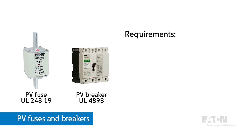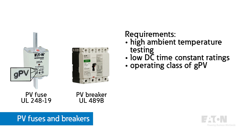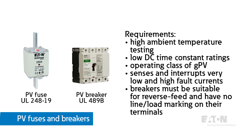These requirements include higher ambient temperature testing, low DC time constant ratings, and an operating class of GPV, which means it is a full range overcurrent protective device capable of sensing and interrupting very low and high fault currents. Additionally, breakers must be suitable for reverse feed and have no line or load markings on their terminals. It's important to note that many of these DC devices are suitable only for their specific application and are not permitted to be used in any other types of circuits. Since so many energy transition applications link multiple DC systems together, it becomes critical to understand where one system ends and the other begins. The type of overcurrent protective device you use will be dependent upon which system it's protecting.